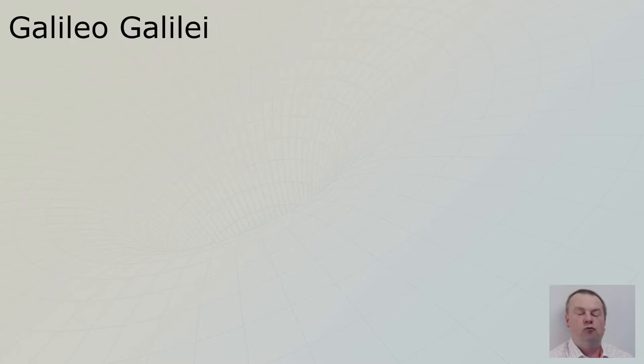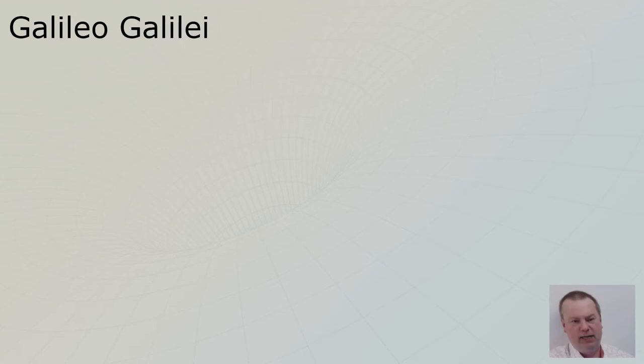Galileo Galilei, a rock star. We have to talk about this guy, this person, this hero. Galileo Galilei, what a name. Galileo lived from 1564 until 1642. He is considered by some as the seventh greatest scientist ever lived. And that's an accomplishment. Number seven. Why? We will look at his accomplishments in a while.